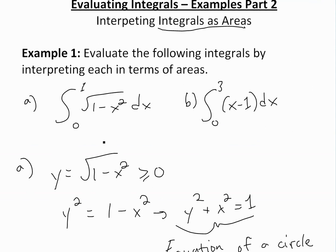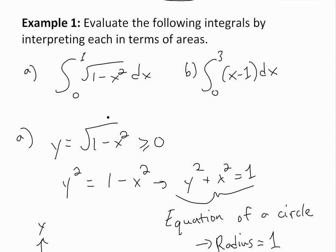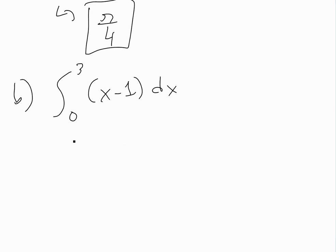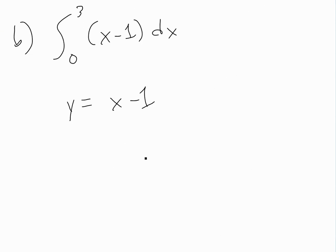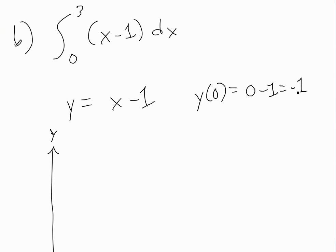That was pretty quick — no antiderivatives or infinite rectangles needed. Now for part b: the integral from zero to three of x minus one. This is a linear graph, y equals x minus one. When x equals zero, y equals negative one. When x equals three, y equals two. Setting y equal to zero gives x equals one, so the graph intersects the x-axis at x equals one.